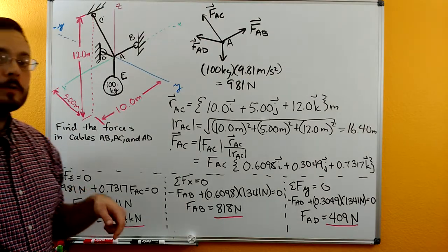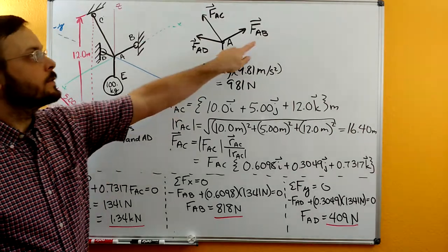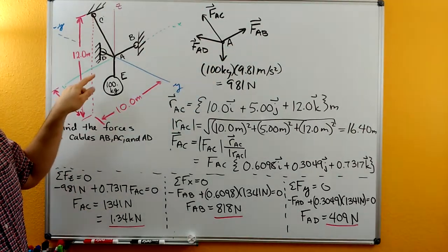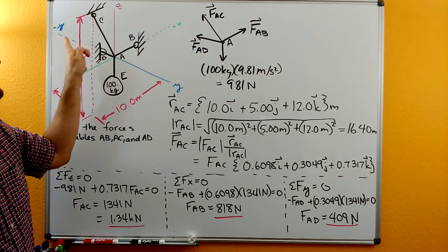We do know the direction of AB. It's going just in the negative x direction. So we already have direction information for AB. We already have direction information for FAD. It's going in the negative y direction.